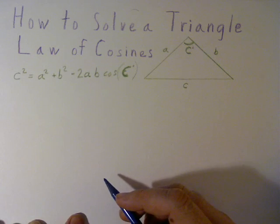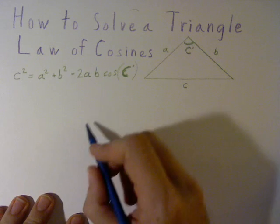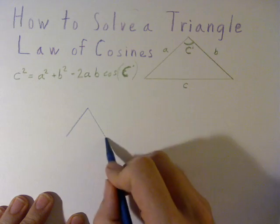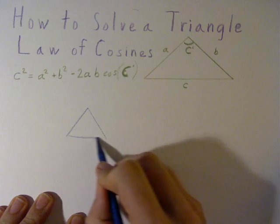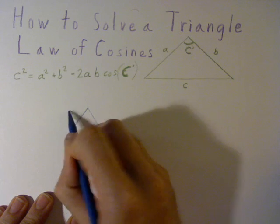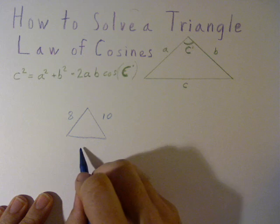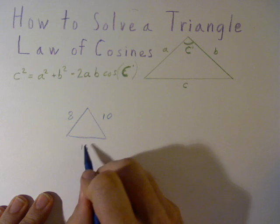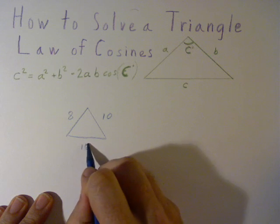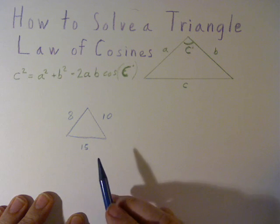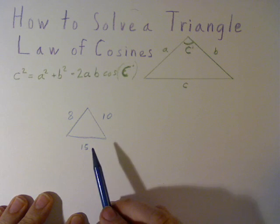In this example, we're going to take a triangle with sides 8, 10, and 15. We're going to solve for the respective angles.